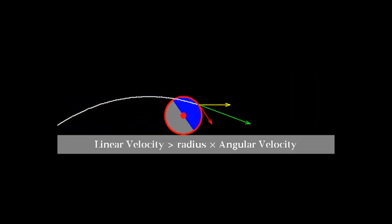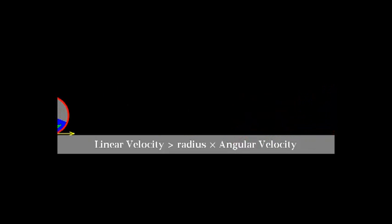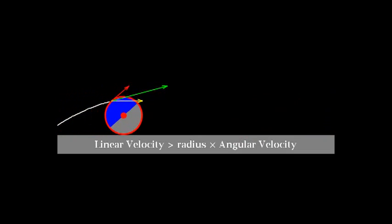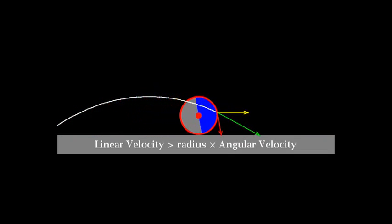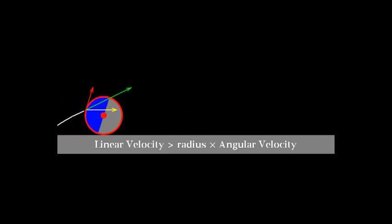Linear speed v is now greater than r omega. The point of contact of the disk with the surface has a velocity directed rightward. Green vector's direction at the moment of contact with the floor is rightward and the disk is now slipping with greater translation and lesser rotation.